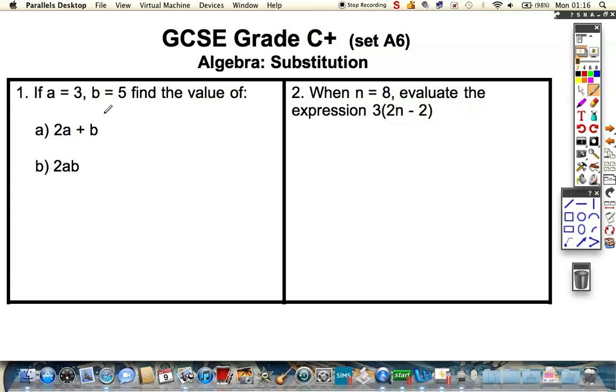Question one. We're asked to evaluate this expression 2a plus b, and we've got values for a and b here. So, fairly straightforward, we've got to do 2 times 3 plus 5, which is obviously going to be 6 plus 5, which is 11.